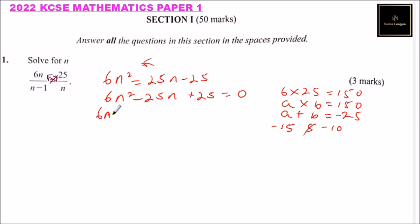So we have 6n squared. Instead of minus 25n, we write minus 15n minus 10n, and then we say plus 25 equals 0.